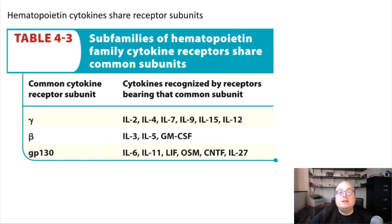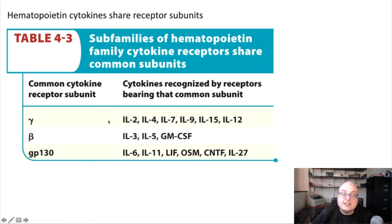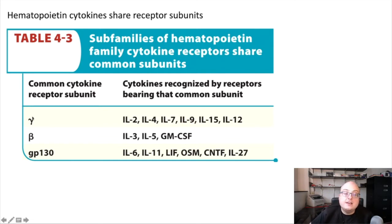There are three subfamilies of hematopoietin cytokine receptors, and what defines each family is that each member shares a common subunit. So IL-2, 4, 7, 9, 15, and 21 all have their own individual subunits, but they can all share a common gamma subunit, and this influences their biology in interesting ways. Similarly, IL-3, IL-5, and GM-CSF all share a common beta subunit. This third group shares a common GP-130 subunit.